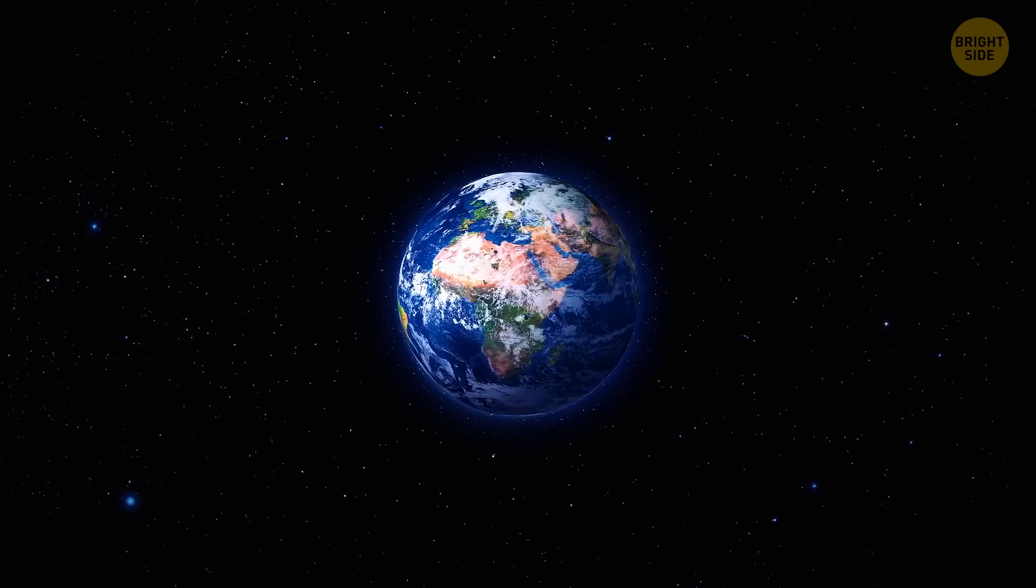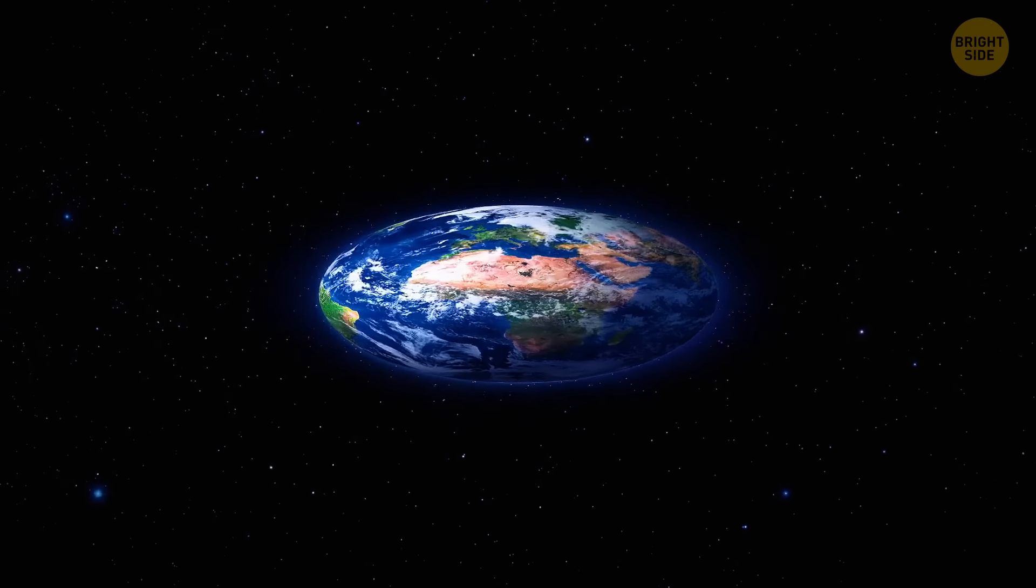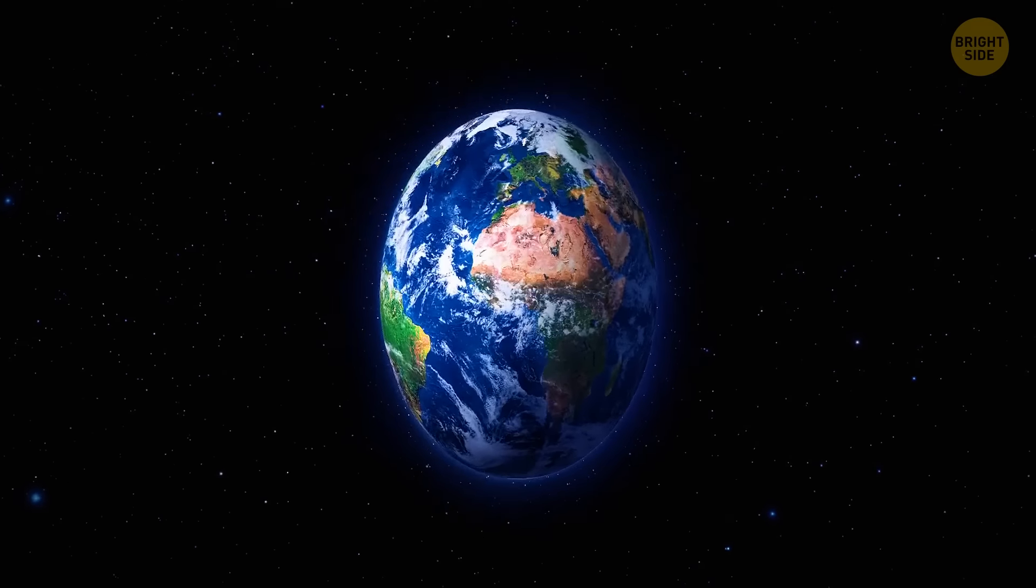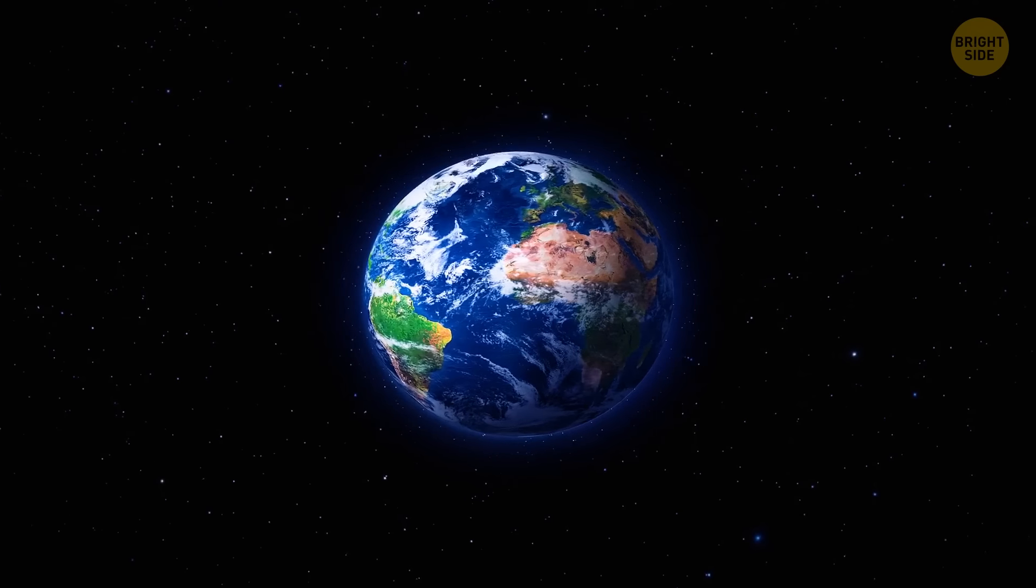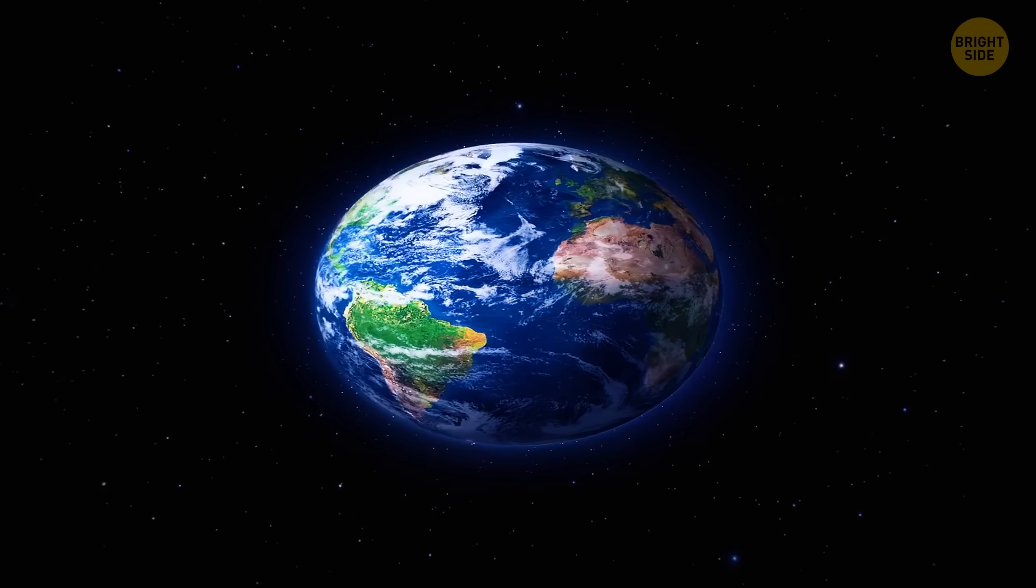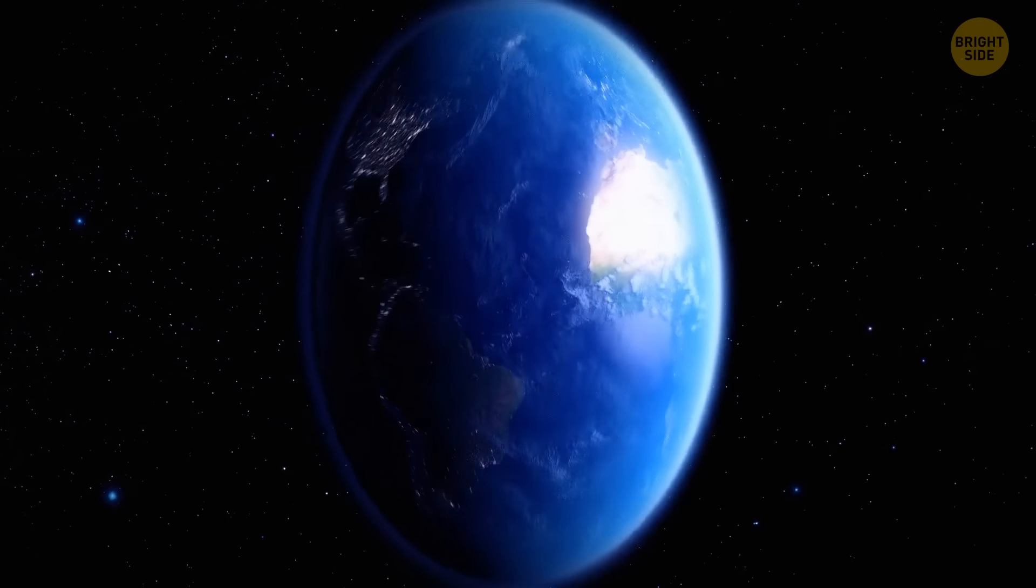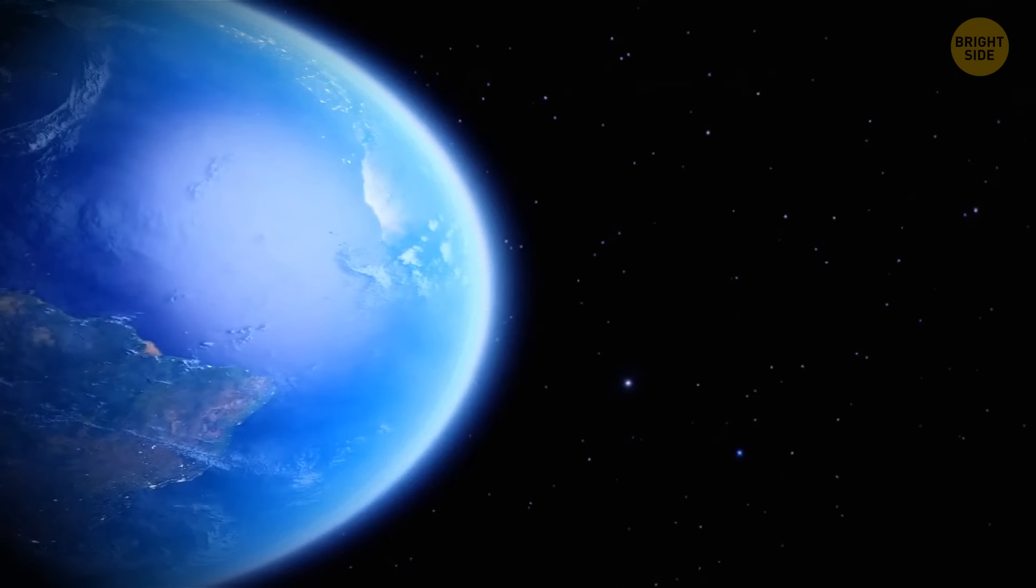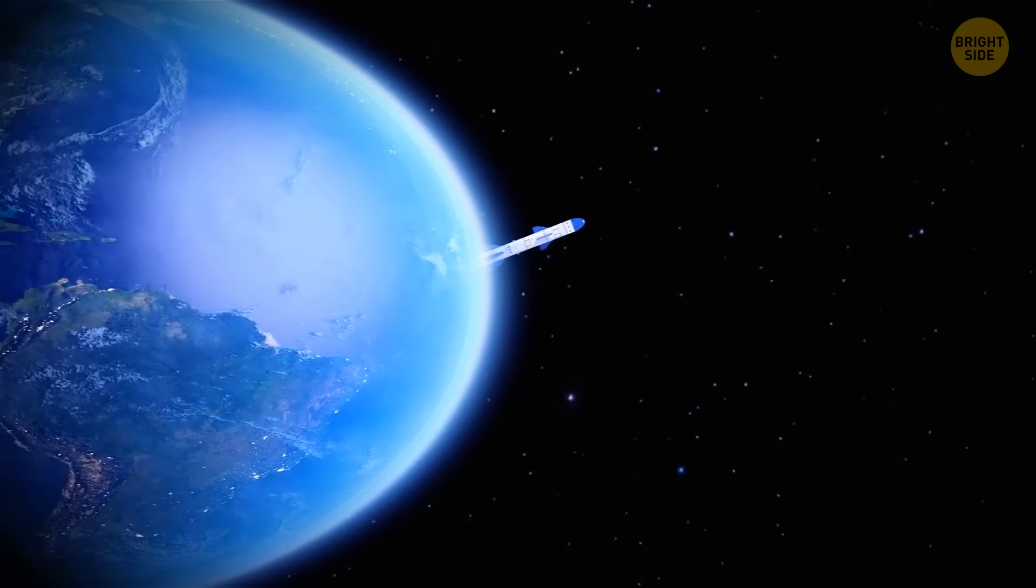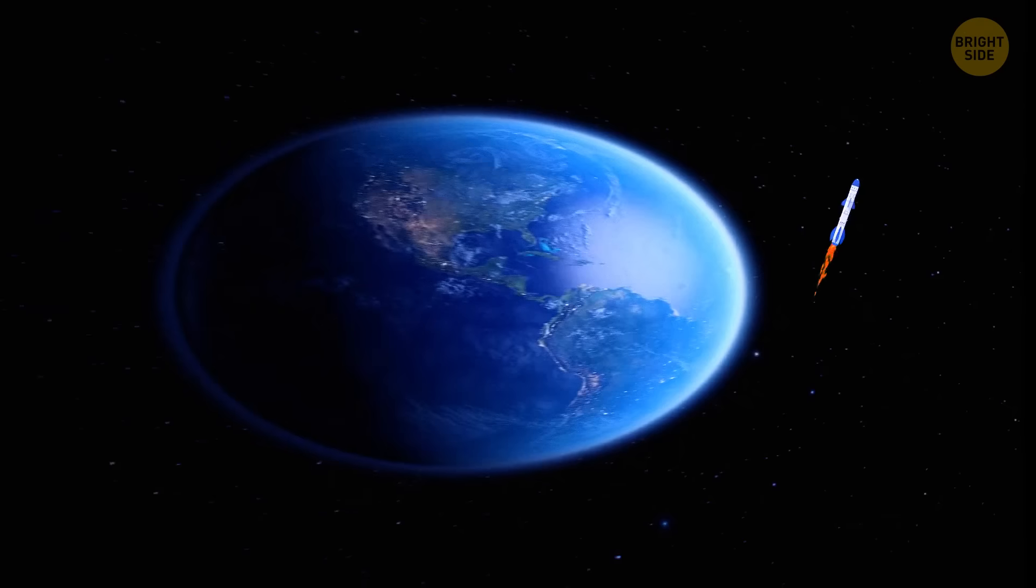Number 9 is our planet's shape. No, it's not flat, but it's not a perfect sphere either. Yeah, it bulges at the equator because of our planet's wild spin. It's like Earth is doing its own little dance. And because of this bulging, launching spaceships from the equator is much easier than from the poles.